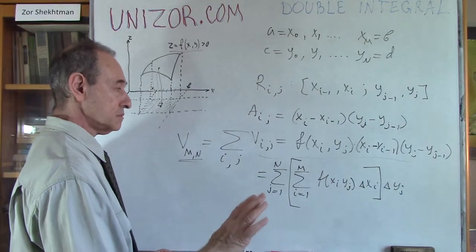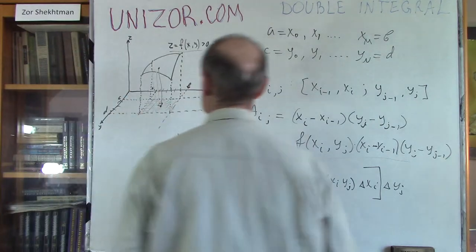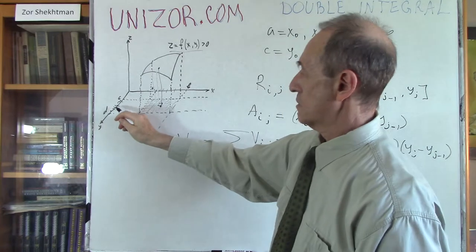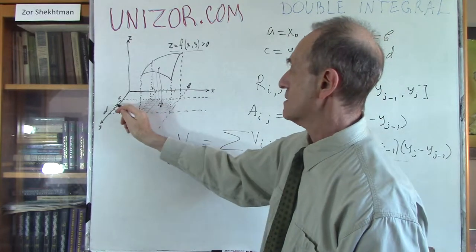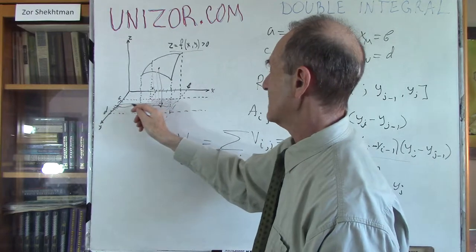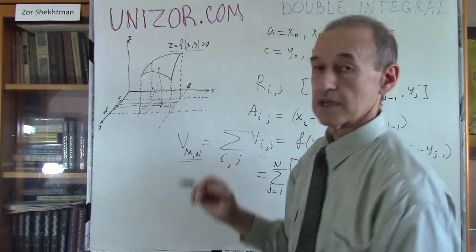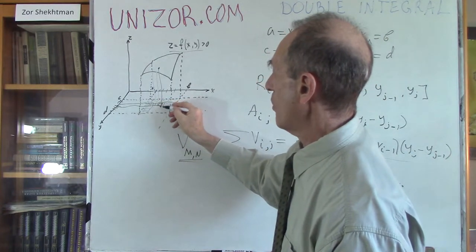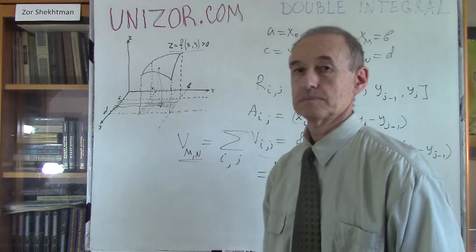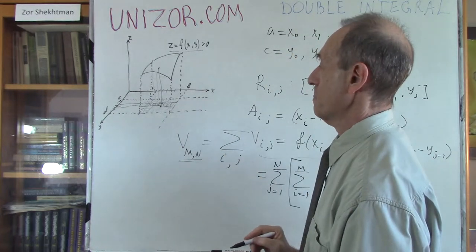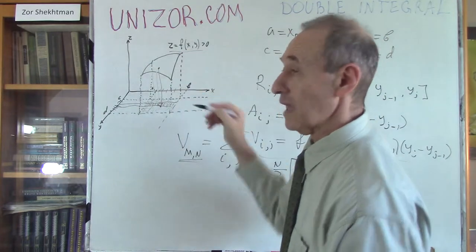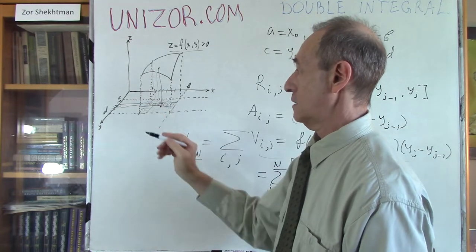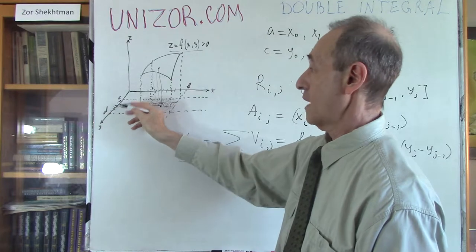If you consider y_j as a constant not yet changing, and just look at the inner sum over i — as Δx_i goes to zero and m goes to infinity — this part must have a limit. You've fixed a particular y_j somewhere between y_{j-1} and y_j, which means you've fixed a particular slice of this figure, and then you make the x-intervals smaller and smaller.